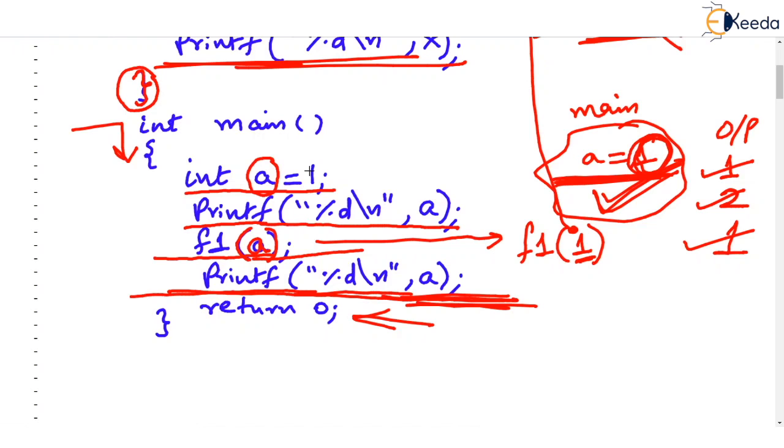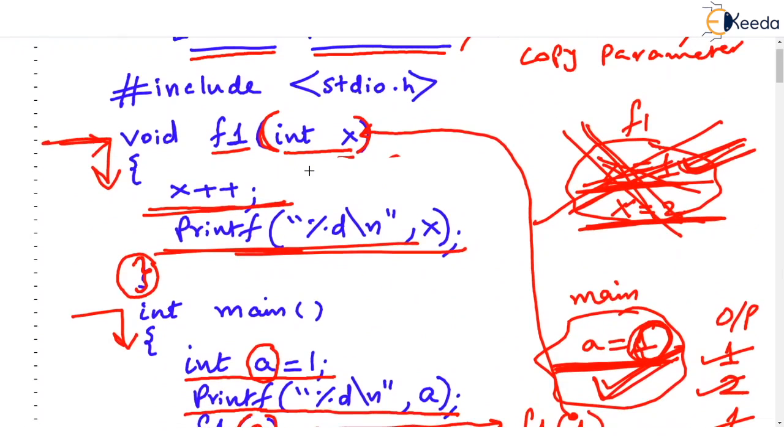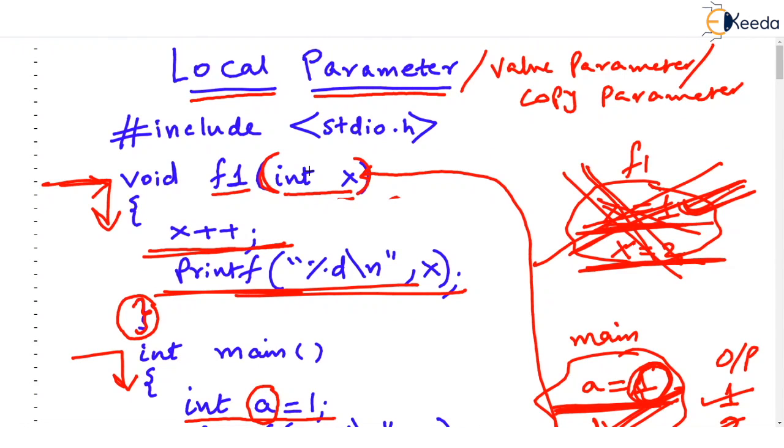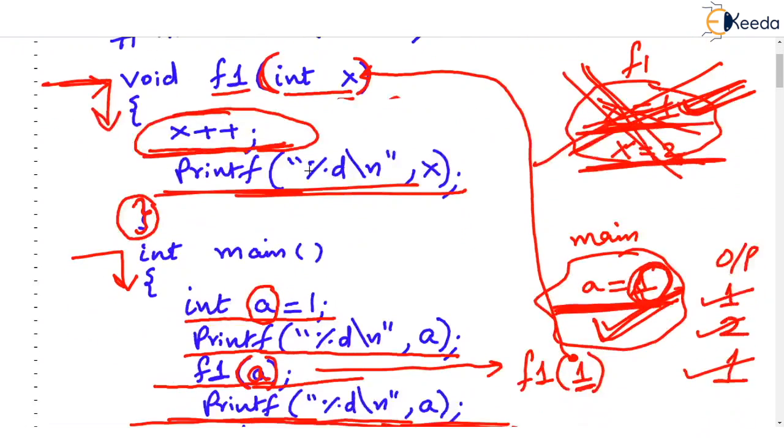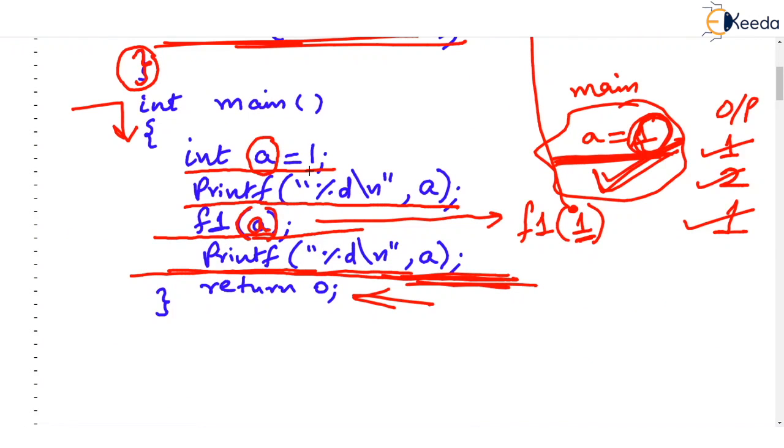What have you proved from this? Very important property: when you pass value to a function, that value is received by local parameter or value parameter or copy parameter. And then, within the function, whatever play you do with that parameter - increase it, decrease it, multiply it, divide it, whatever you do - those changes will not be transferred to the original variable that you passed. This discussion of local parameter was so important. You are passing a copy of the value. You are not passing all permissions that whatever changes you will do will be transferred in the original a.